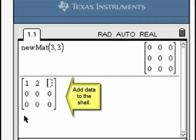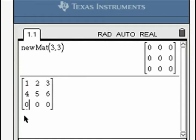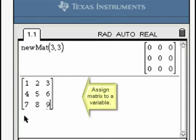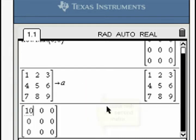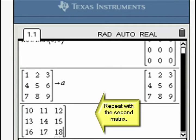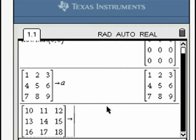Insert the data into the matrix and assign the matrix to variable A. Repeat with a new matrix. Input the data into the matrix shell. Assign this matrix to variable B.